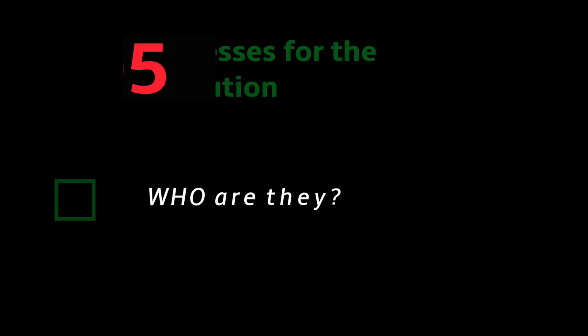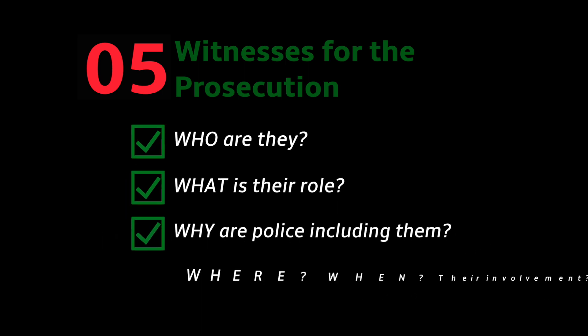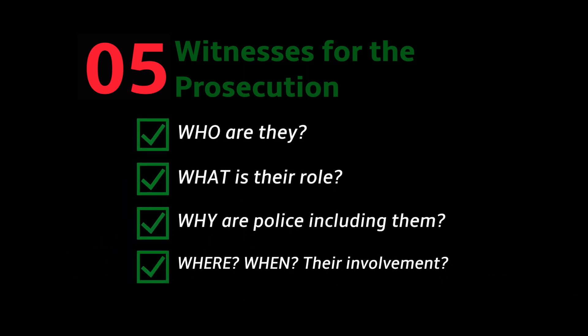Document five: the same framework as the previous document but for witnesses for the prosecution. Again: who they are, what they are, what their role is — are they professional? — what's their relationship with you, why the police have included them on their list of prosecution witnesses, and again where and when and their involvement in the incident.